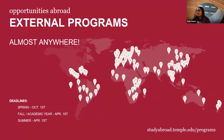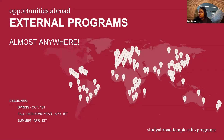Our external programs have locations on every continent. If you are interested in studying abroad this summer or this fall, you do have a bit more time — the deadline is April 1st for the summer and fall semesters. And if you're looking at spring 2025, you have until October 1st to apply.